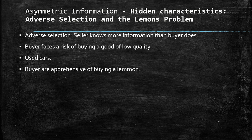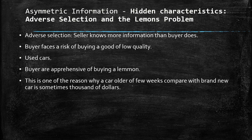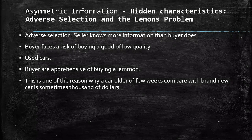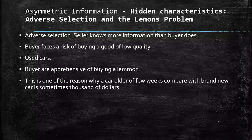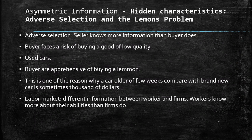Buyers are apprehensive of buying a lemon — a bad quality car. This is one reason why a car that is a few weeks old compared to a brand new car can be thousands of dollars cheaper. If you see a car from 2019 being sold after only two or three weeks, you might think something is wrong with it — maybe it's a lemon. Another example of adverse selection is the labor market, where workers know more about their abilities than firms do.